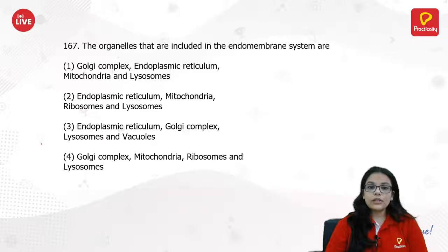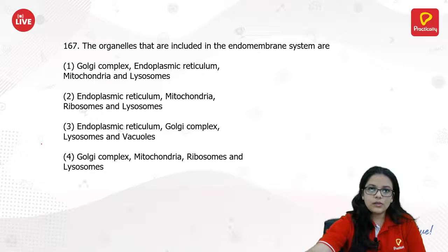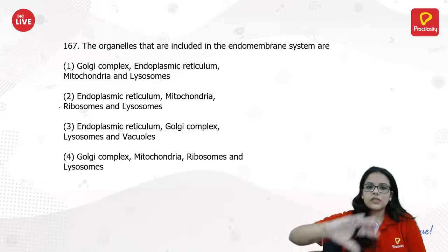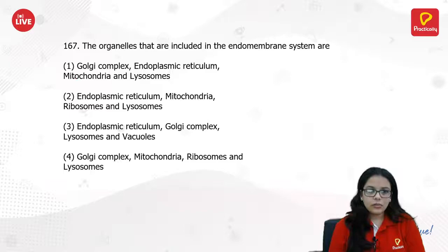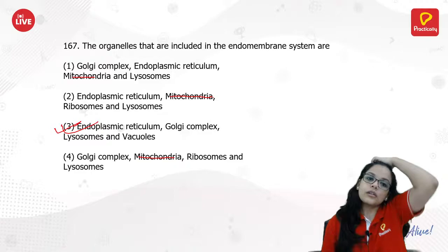The organelles included in the endomembrane system are those suspended in the cytoplasm of the eukaryotic cell. Not mitochondria — mitochondria has its own system. Whatever does not include mitochondria: endoplasmic reticulum, Golgi complex, lysosomes, and vacuoles. The answer is 3.